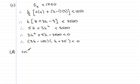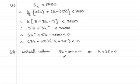So for the critical values, that would be where 3K minus 100 equals 0 or K plus 35 equals 0. And that would lead to the values of K being equal to 100 over 3, a hundred thirds, or...